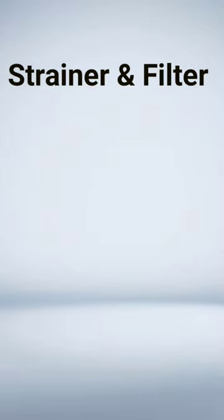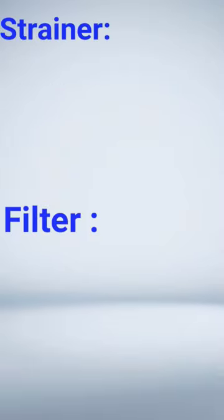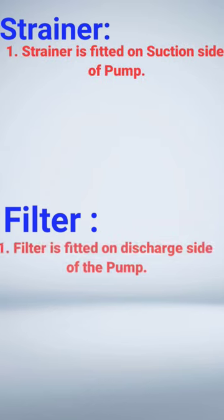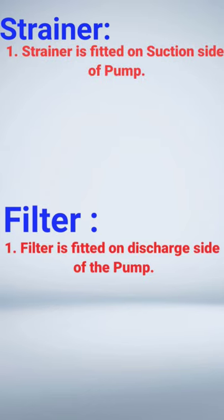Strainer and filter — what is the difference between these two? A strainer is used on the suction side of the pump, and the filter is used on the discharge side of the pump, because a filter has minute meshing. To pass a liquid or gas through this meshing, we need pressure, which is available on the discharge side.